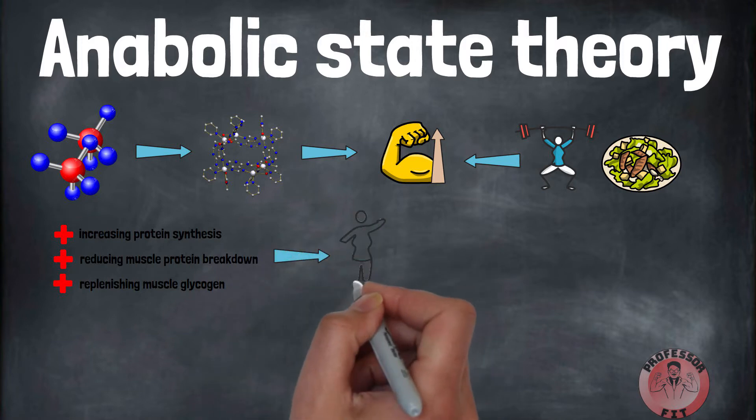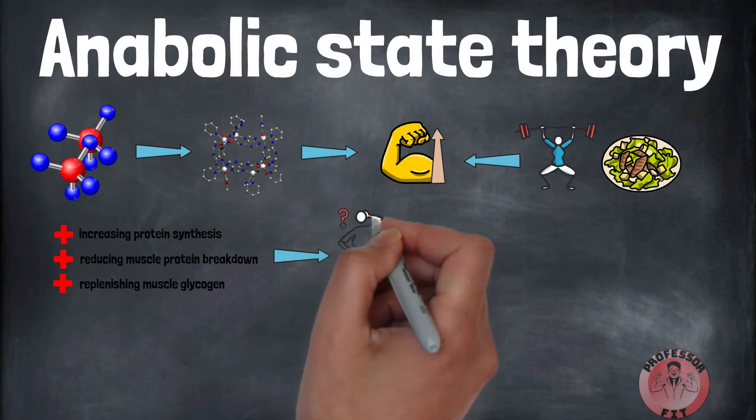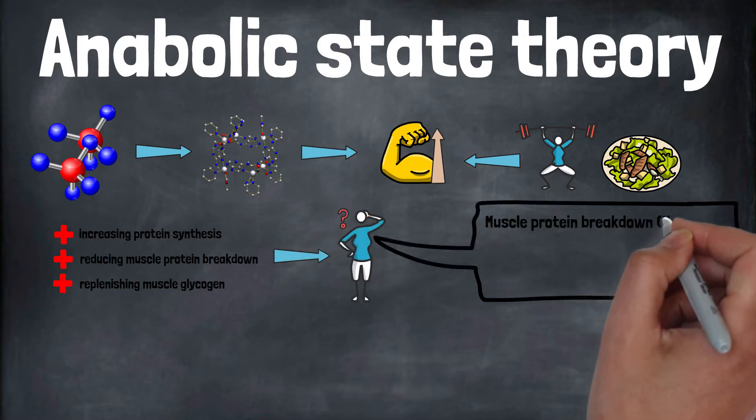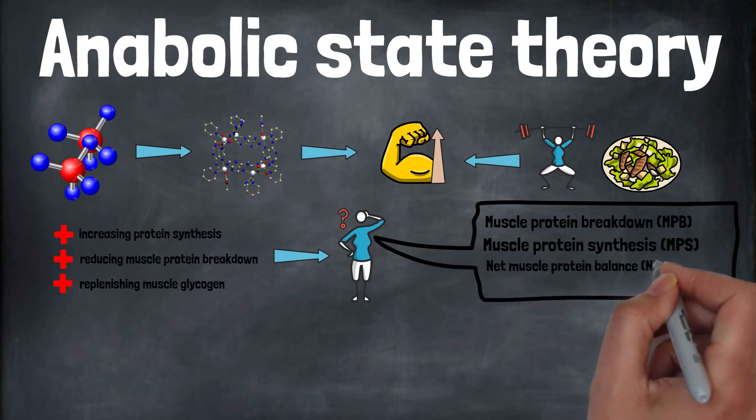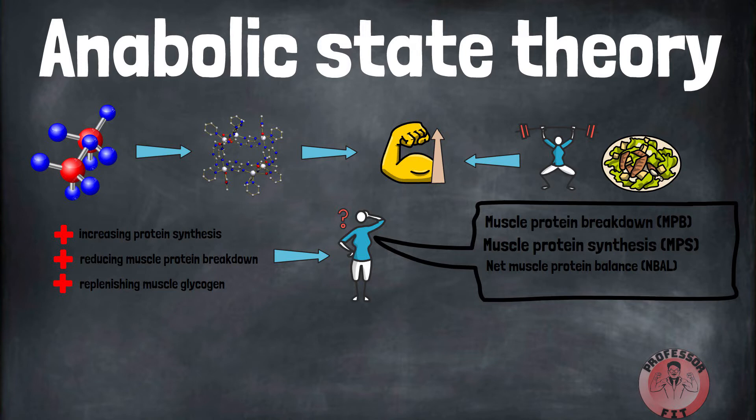There's some merit to these claims. According to a 2018 study, muscle protein breakdown (MPB) increases in response to strength training. Muscle protein synthesis (MPS) also increases, but to a greater extent. The balance between MPB and MPS determines muscle growth. This balance is called net muscle protein balance (NBAL).